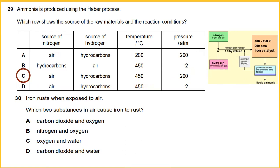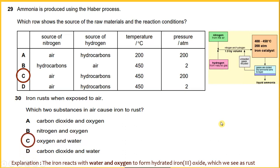Iron rusts when exposed to air. Which two substances in air cause iron to rust? The iron react with water and oxygen to form iron(III) oxide, which we see as rust. So the answer would be oxygen and water.